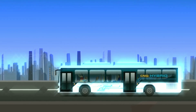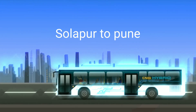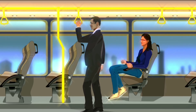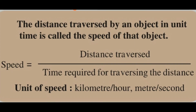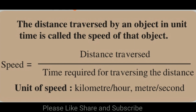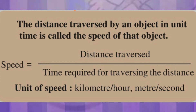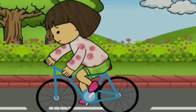Speed: A bus covers a distance of about 200 km from Solapur to Pune in 5 hours. When solving this example, we take the ratio of the distance traversed and the time required to traverse that distance. The distance traversed by an object in unit time is called the speed of that object. Speed equals distance traversed divided by time required. The unit of speed is km per hour or m per second. Always remember, a moving object may not have only one type of motion.